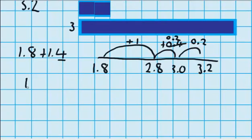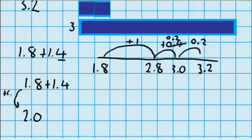Now let's see if we can answer it another way. 1.8 plus 1.4. This time I want to change 1.8 into two wholes, because that will make this question easier. To move it into two wholes I'm going to need to add 2 tenths, and I'm going to get those 2 tenths from the 1.4. So 1.4 minus 0.2 will equal 1.2. And now I've got another easy question to answer: two wholes plus 1.2 equals 3.2.